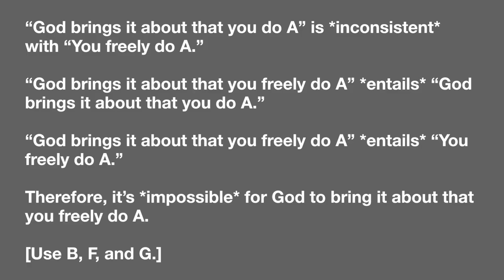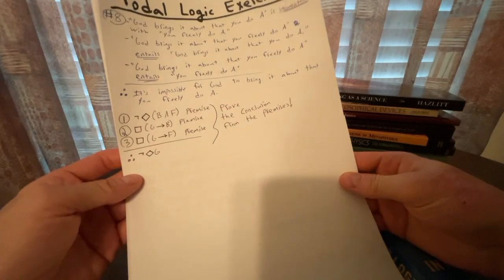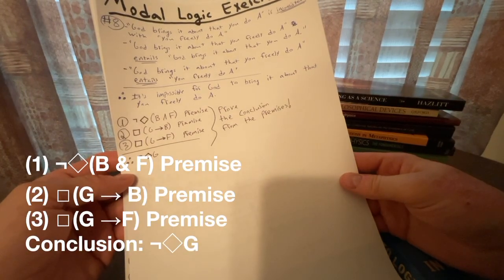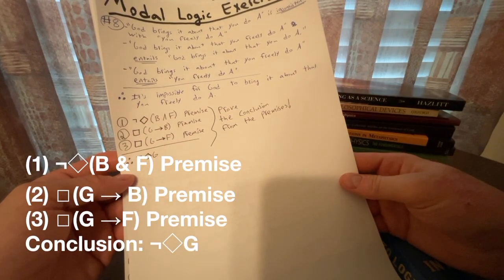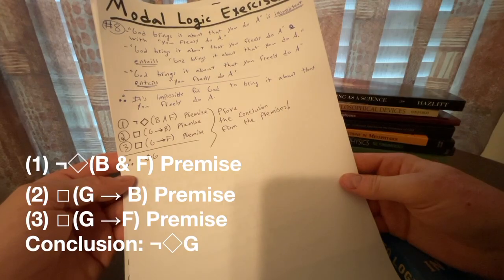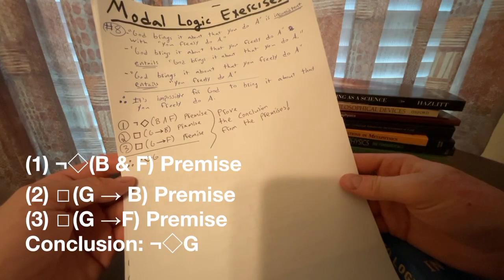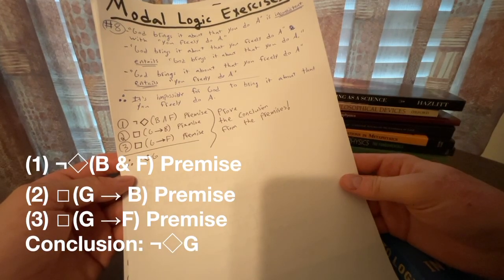Translating this argument is a bit tricky. Here's a few hints. For example, the first premise with the inconsistency is telling us we have it is not possible, so a not diamond. And the other two premises, the entails tells us we have conditionals, but also that these are necessary statements. So we have that box. So here is our argument. Premise one: not diamond parentheses B and F close parentheses, where B stands for God brings it about that you do A, and F stands for you freely do A.